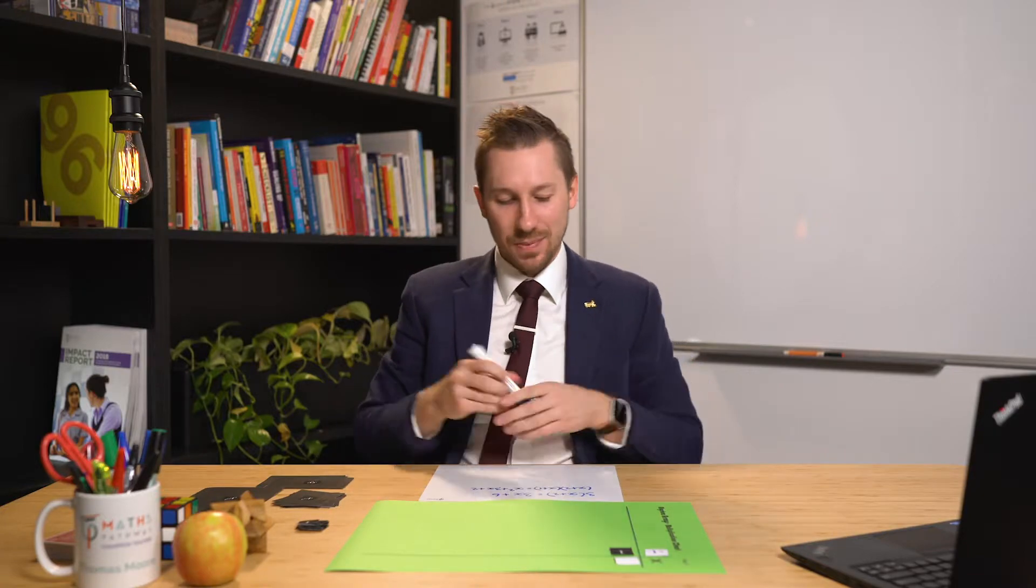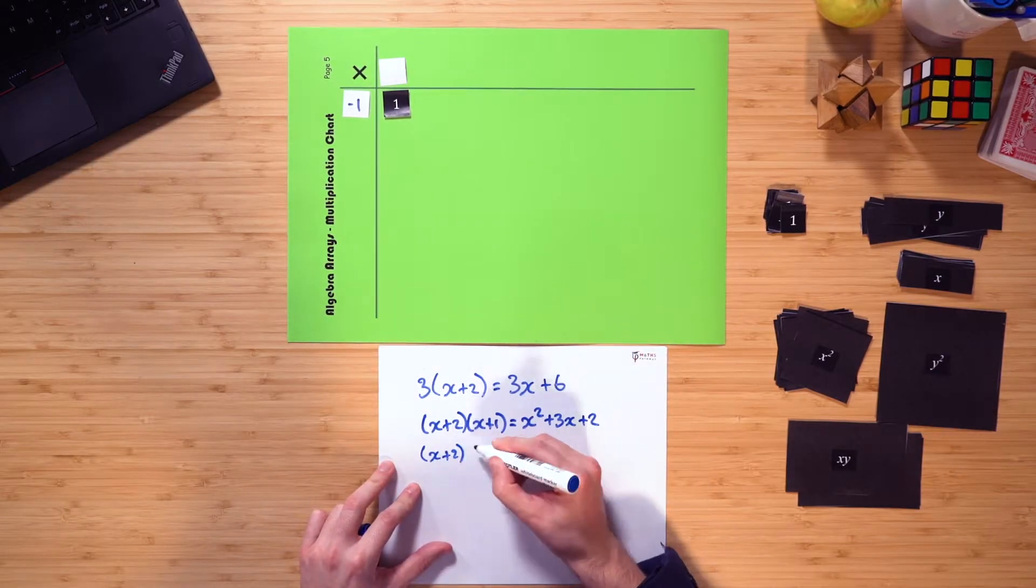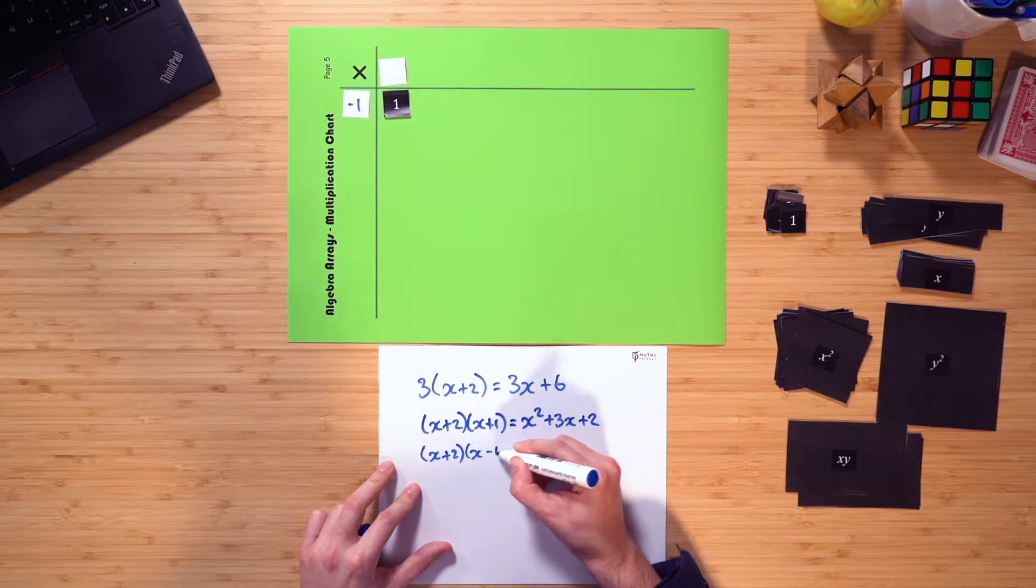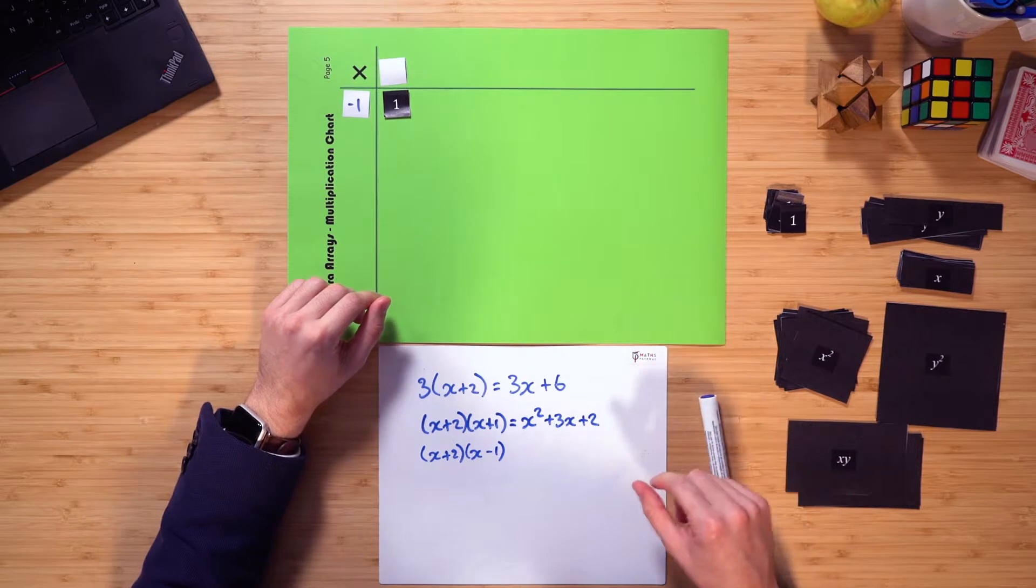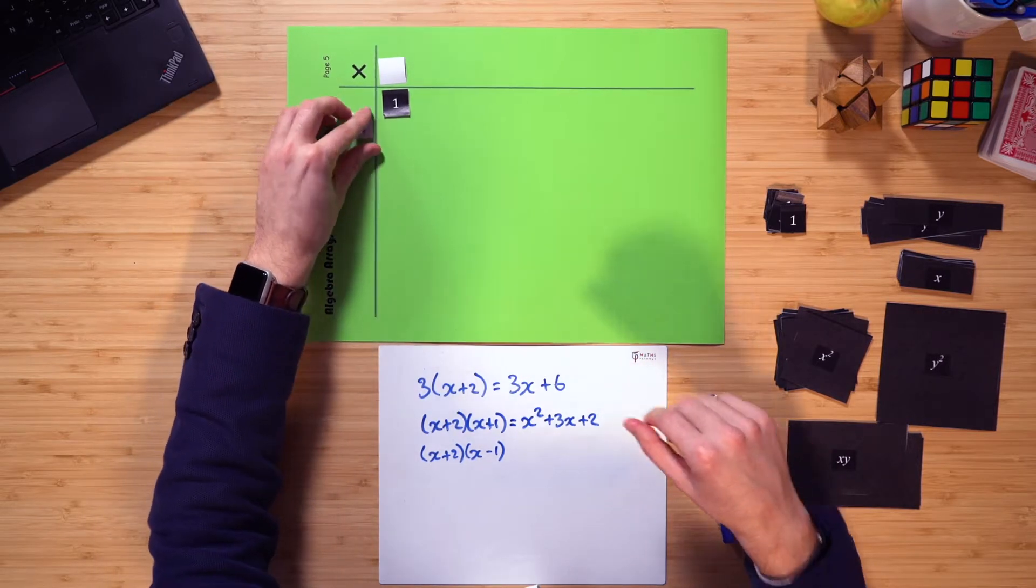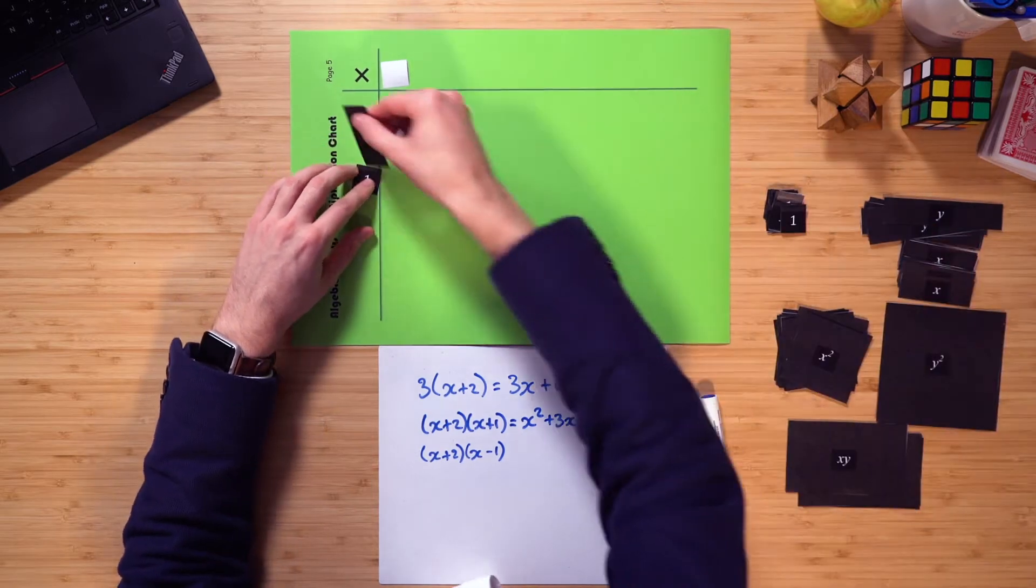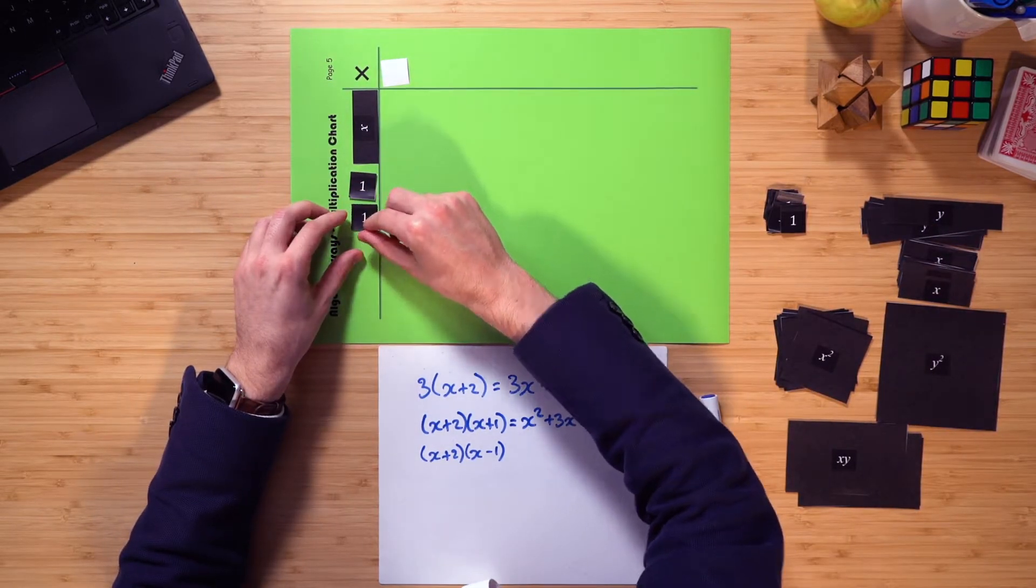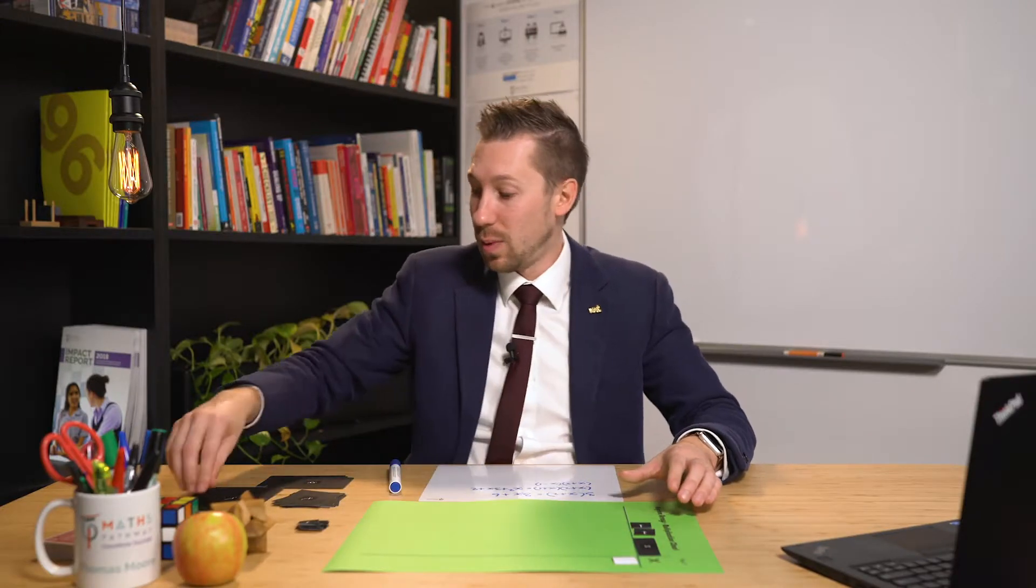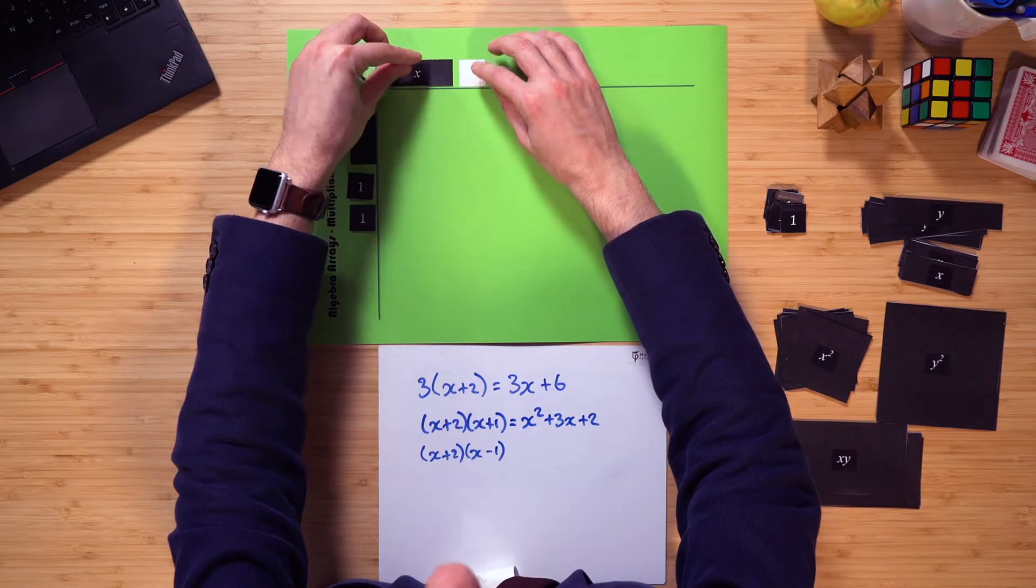Let's have a look at it in action. What happens if I have x plus 2 multiplied by x minus 1? Well, let's go through and use the model to have a look at it. First of all, I need to use x plus 2, so I'll go x plus 2, I'll grab an x, and I'll do x plus 2, and then I'm going to do x minus 1, so I need an x, and then for the minus 1, I'll simply use the minus 1 that I already had there.